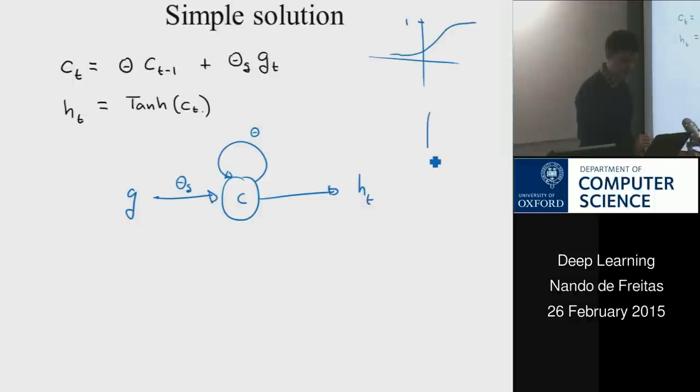there is this cell here with parameter theta. You have G. And there's a parameter theta G here. And then there's an output which is H after doing a tanh nonlinearity. Which reminds me, I don't think we've done the tanh.